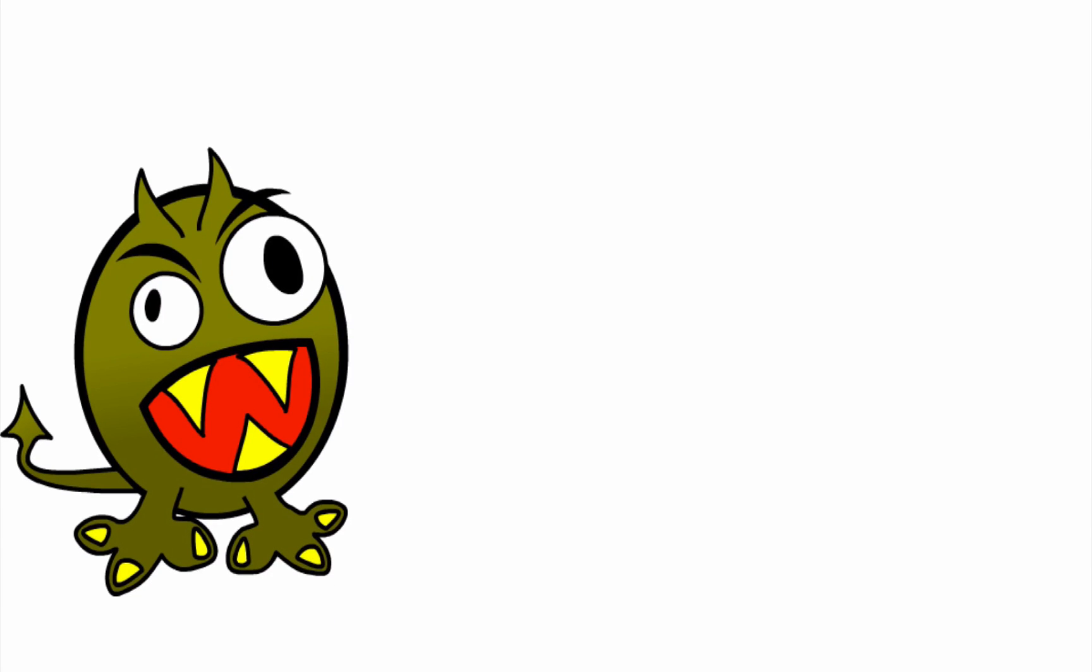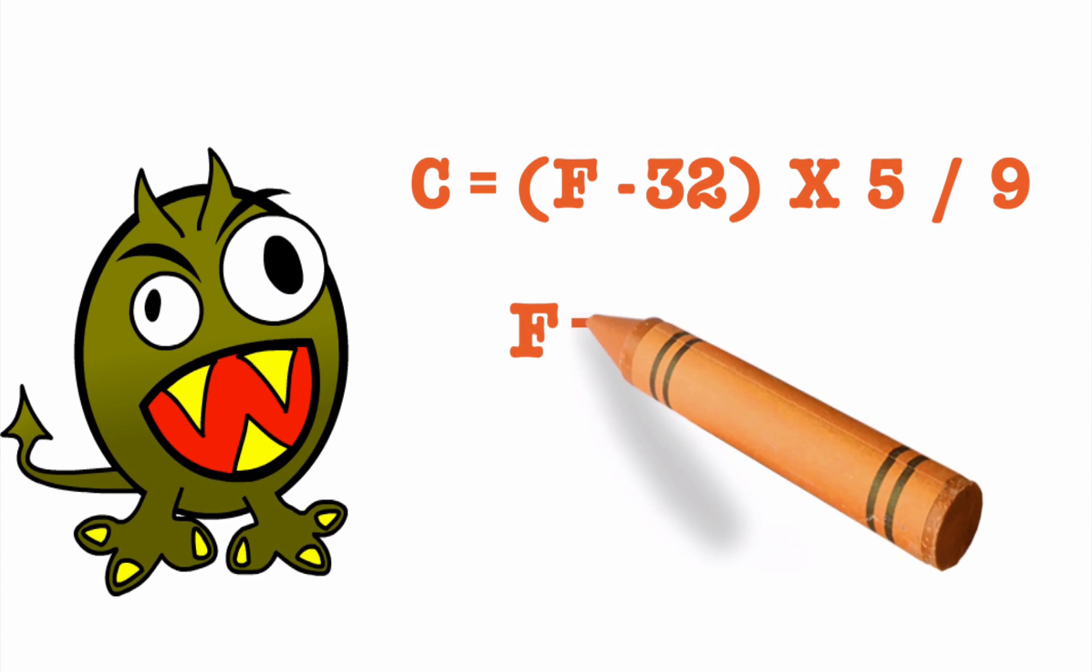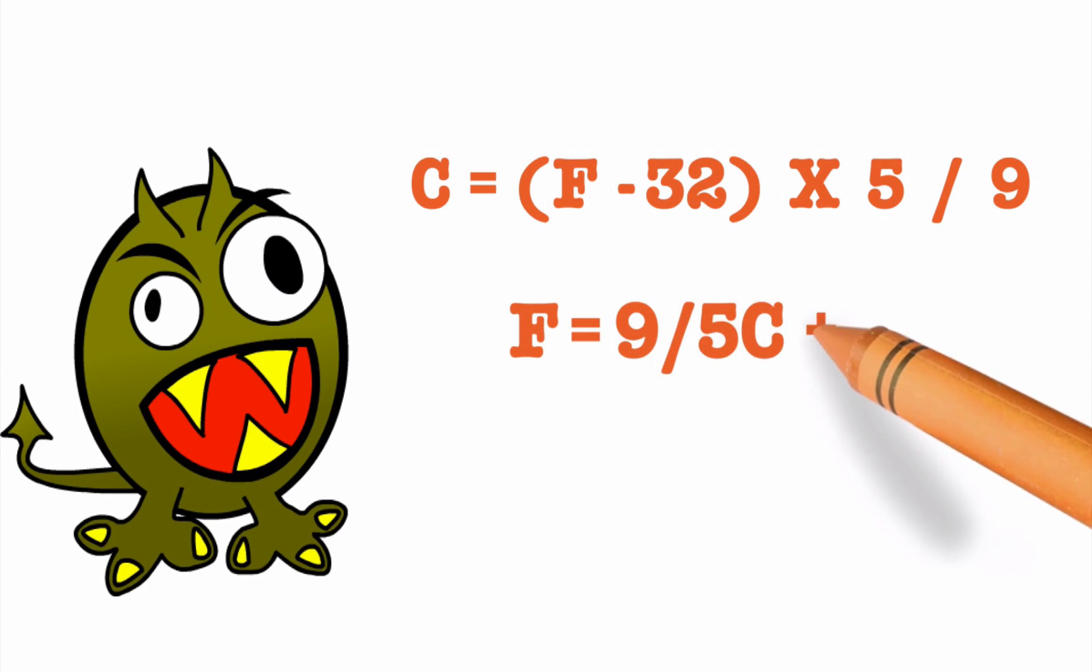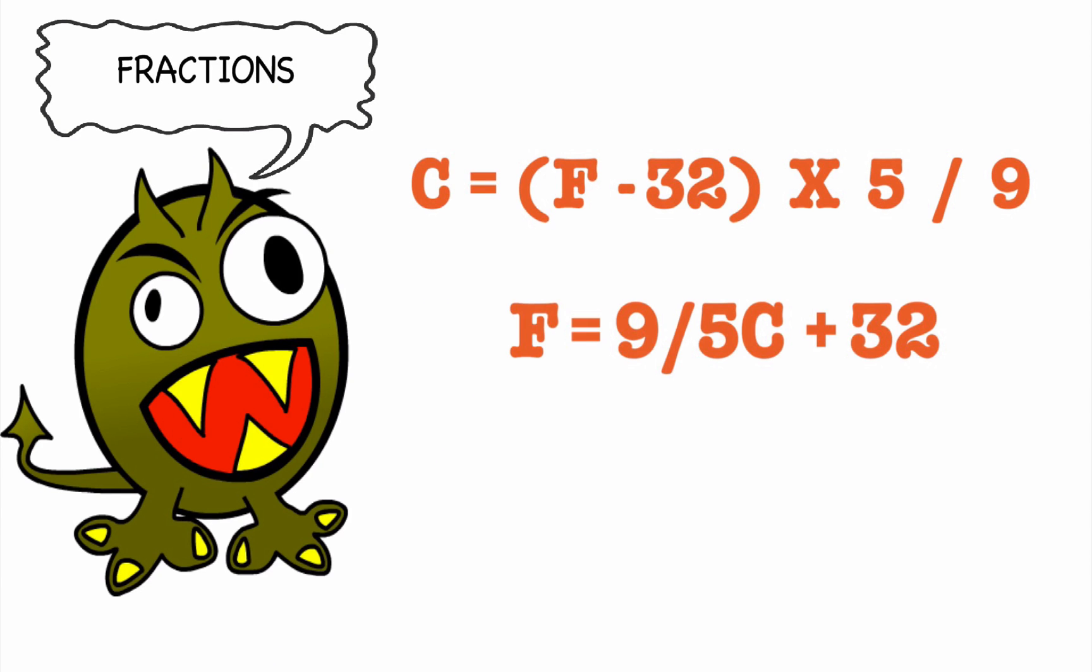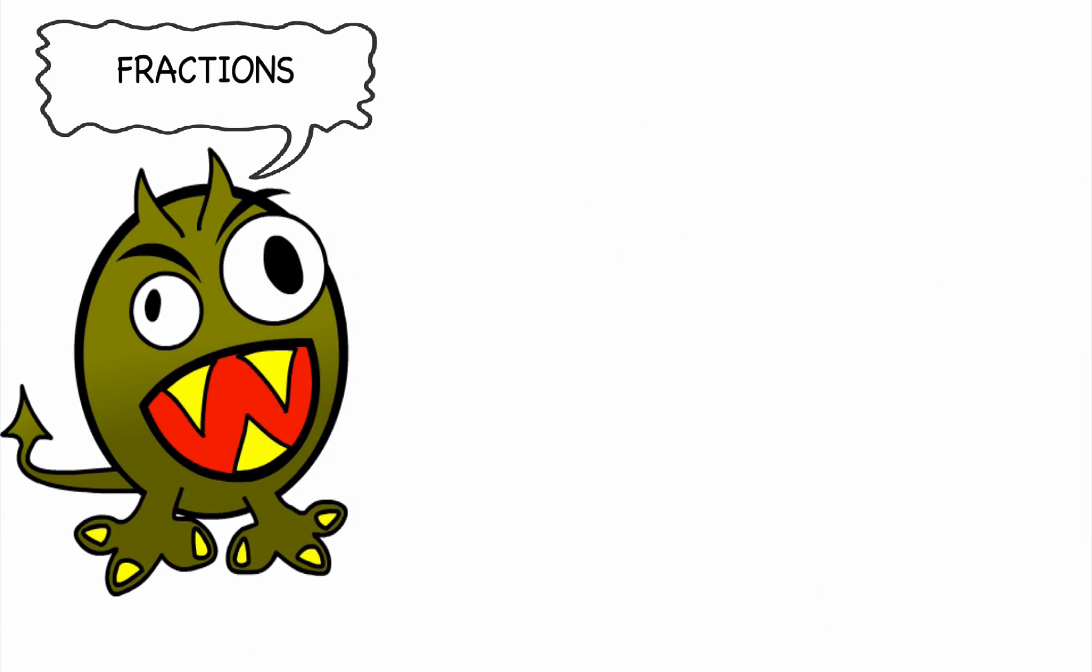Now here is the formula most of us are taught: C equals F minus 32 times 5 divided by 9, or F equals 9 divided by 5 times C plus 32. This formula is great and yes it works, but it's not very easy to remember. Also, many learners find the fractions confusing.